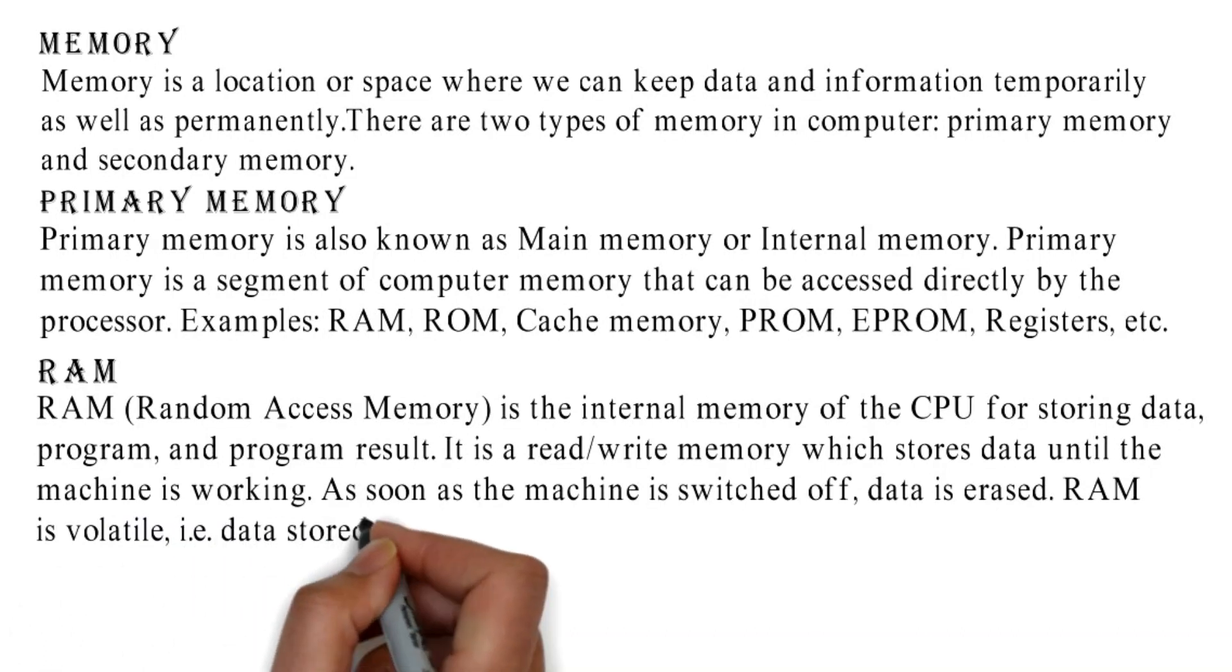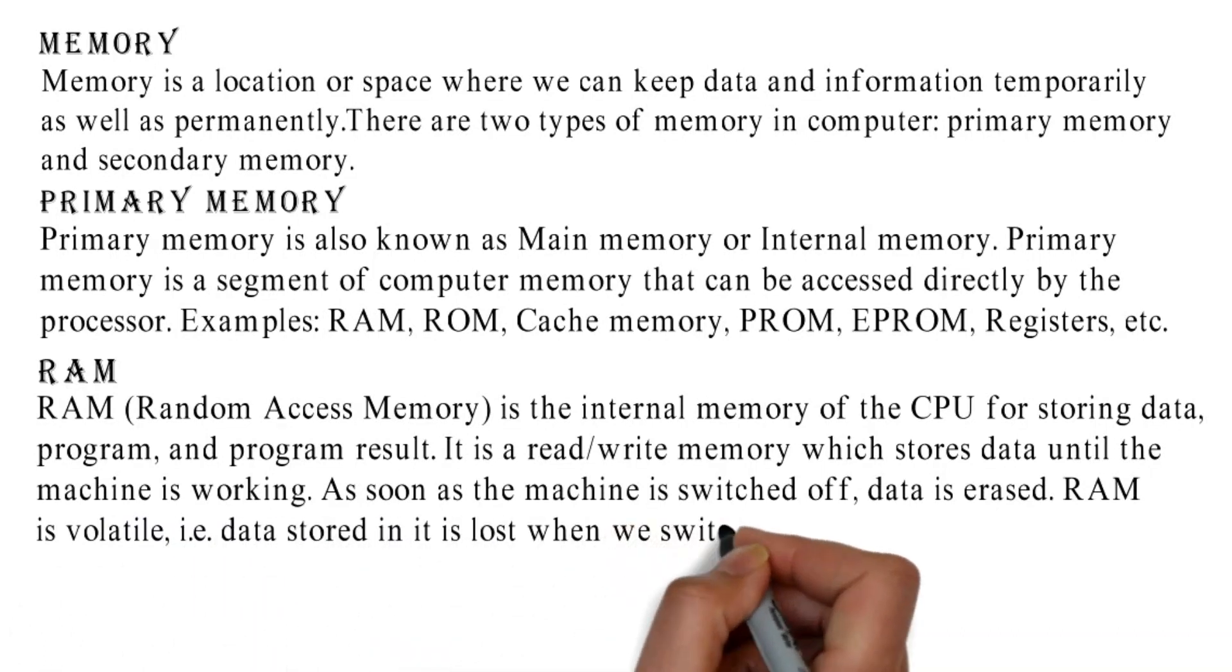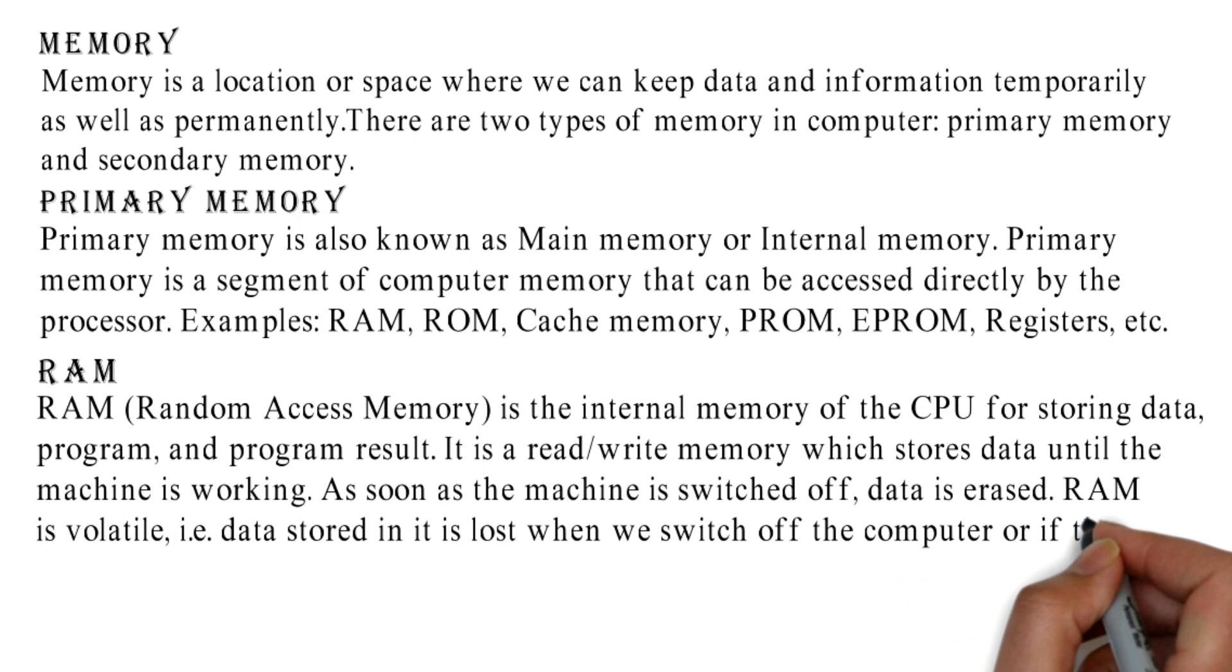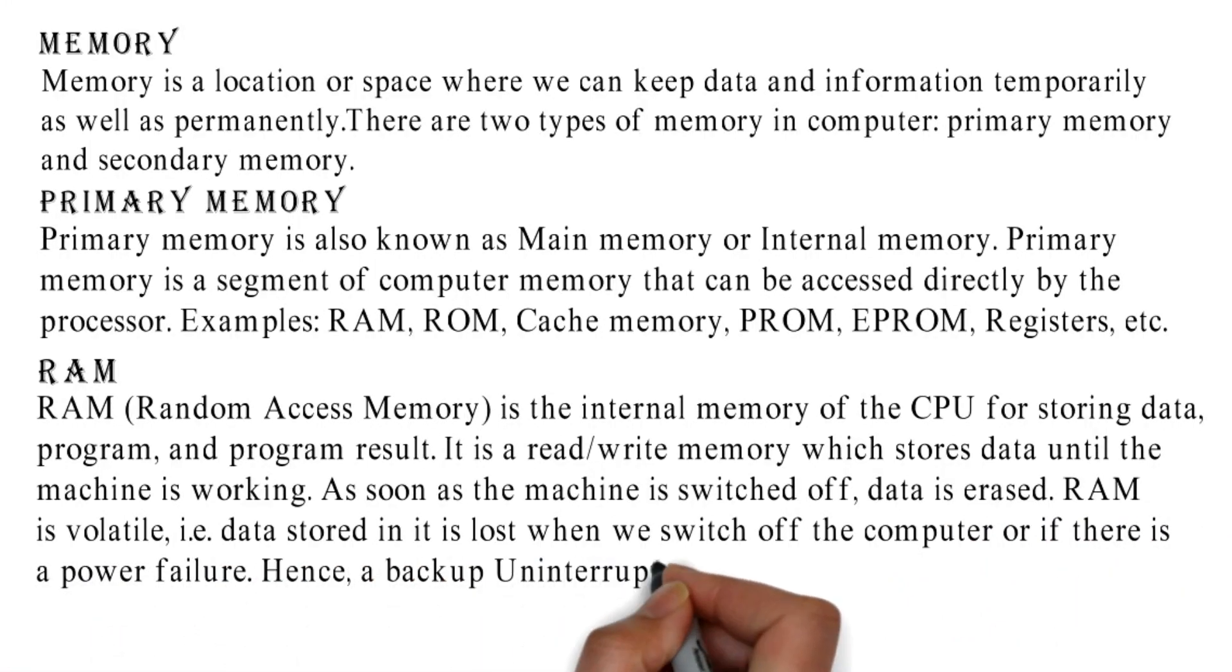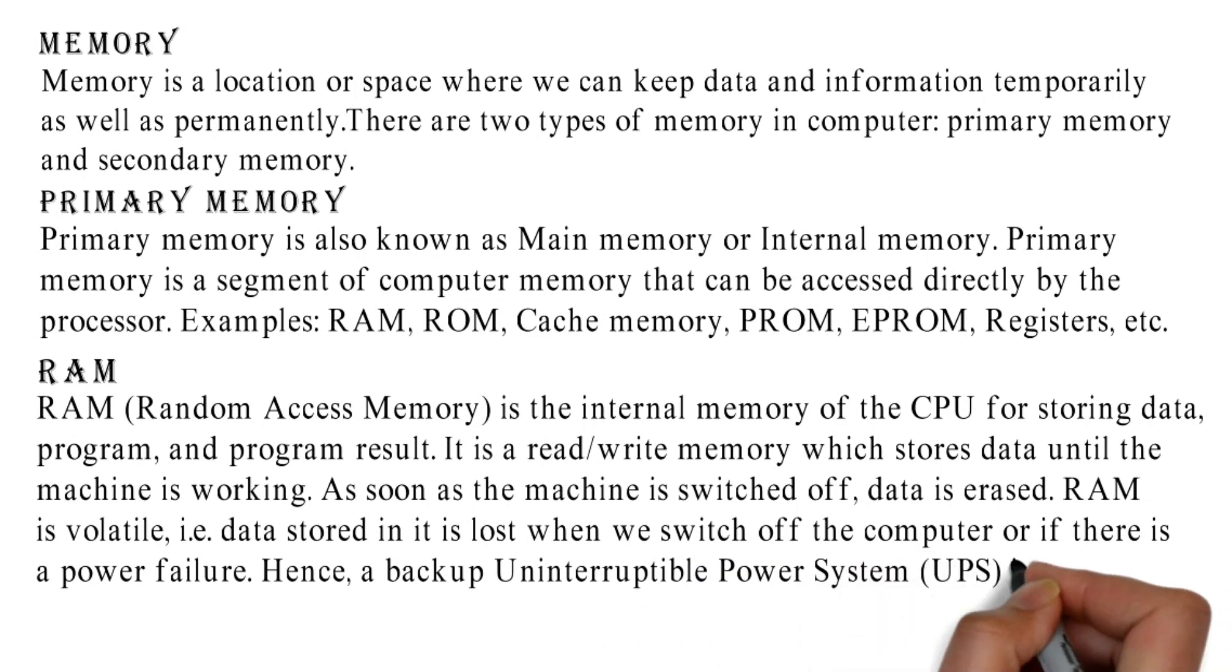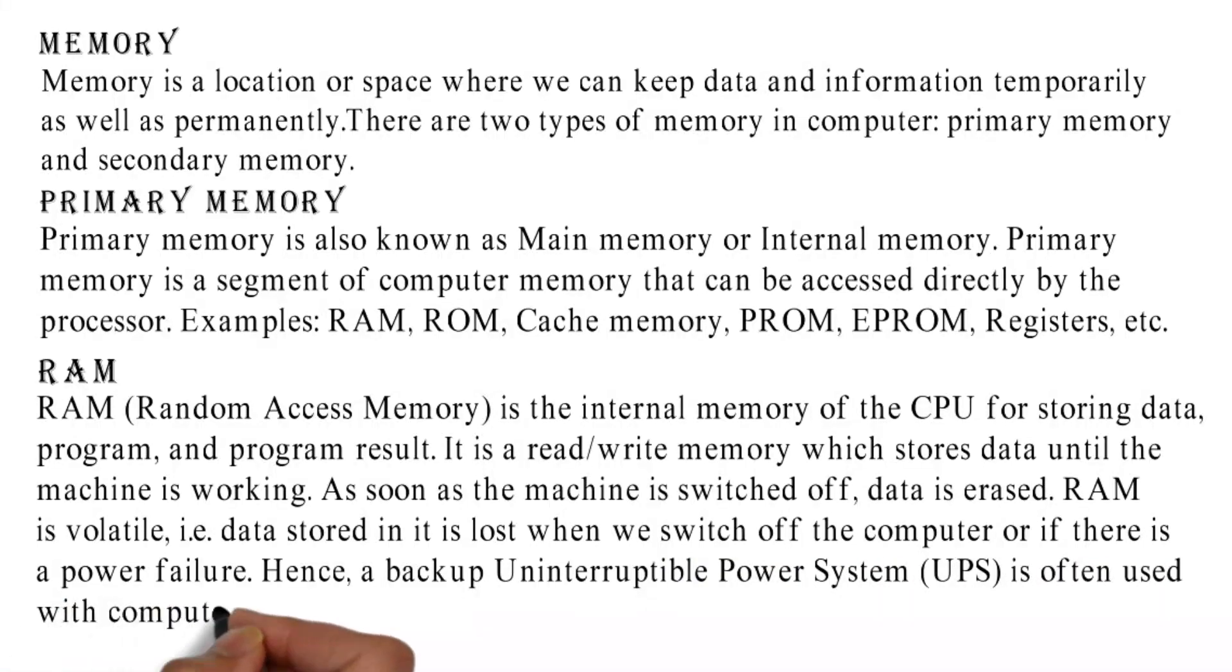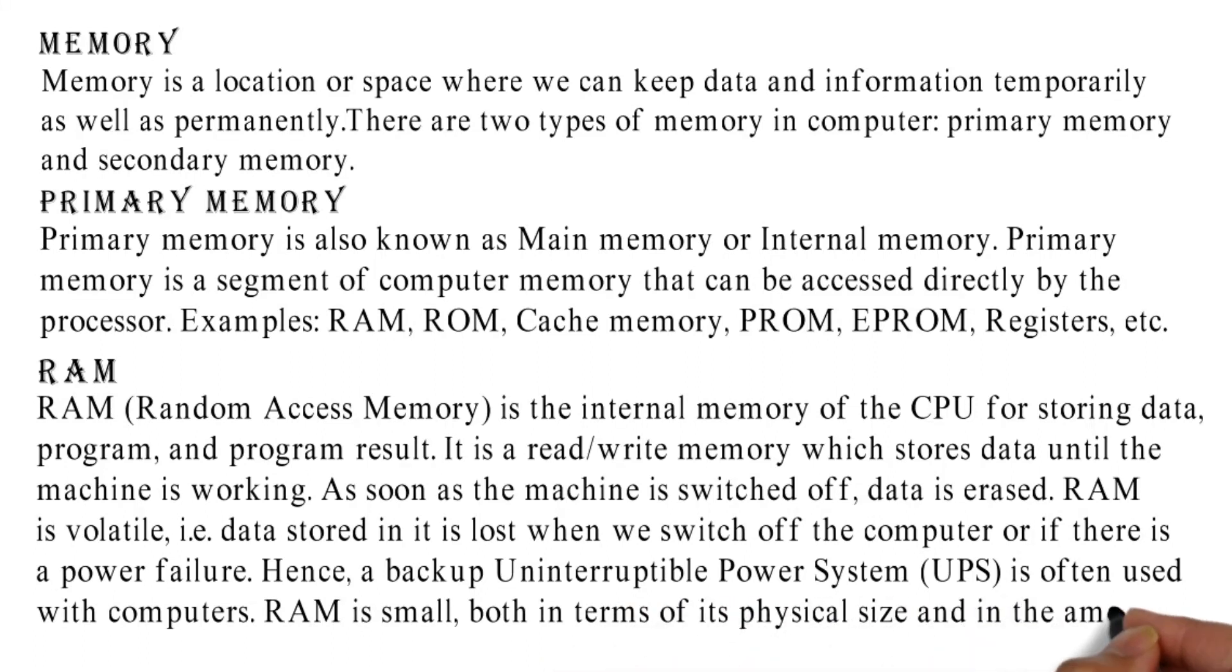RAM is volatile, i.e., data stored in it is lost when we switch off the computer or if there is a power failure. Hence, a backup uninterruptible power system (UPS) is often used with computers. RAM is small, both in terms of its physical size and in the amount of data it can hold.